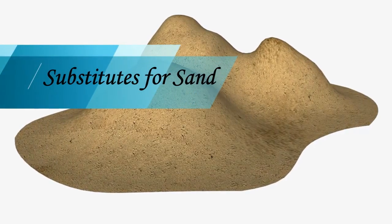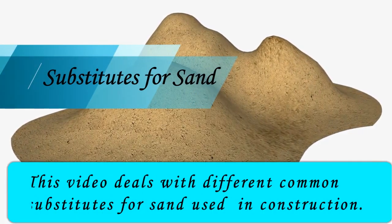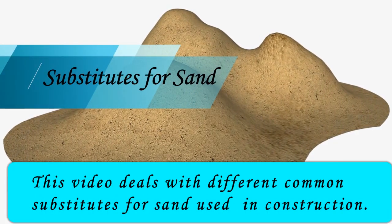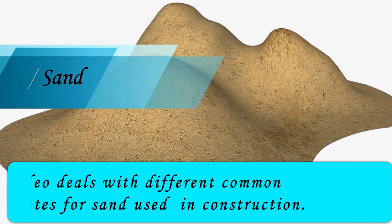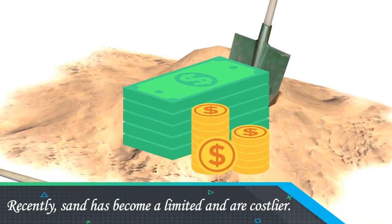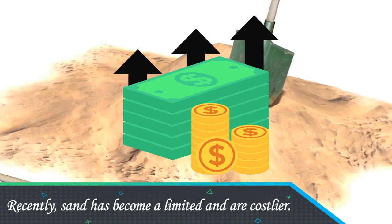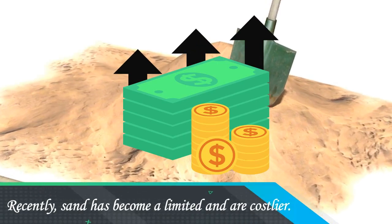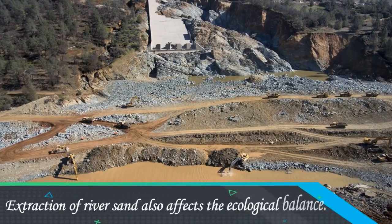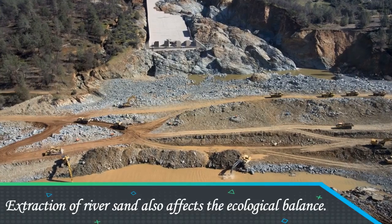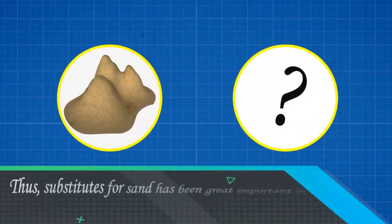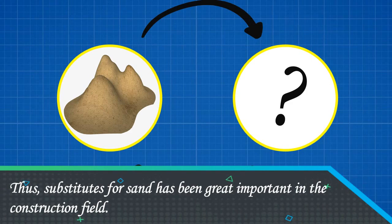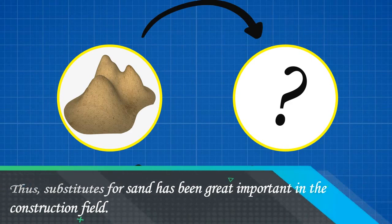This video deals with different common substitutes for sand used in construction. Recently, sand has become limited and costlier. Extraction of river sand also affects the ecological balance. Thus, substitutes for sand have become greatly important in the construction field.